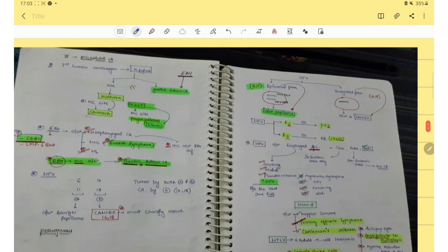Then microbial carcinogen. In H. pylori, it causes gastric adenocarcinoma. Then Epstein-Barr virus, it causes nasopharyngeal carcinoma and NHL, that's Burkitt's lymphoma. Epstein-Barr virus also causes gastric adenocarcinoma.